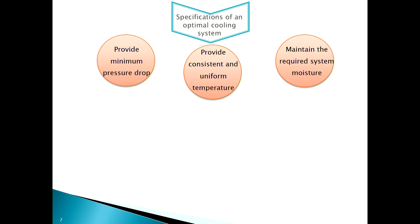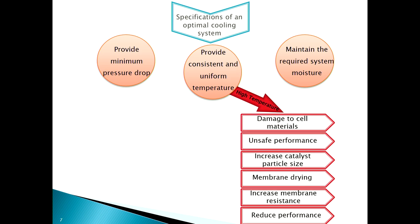High temperature has several negative effects: it will damage the cell materials, cause unsafe performance, increase catalyst particle size, lead to membrane drying, and increase membrane resistance, ultimately reducing performance.